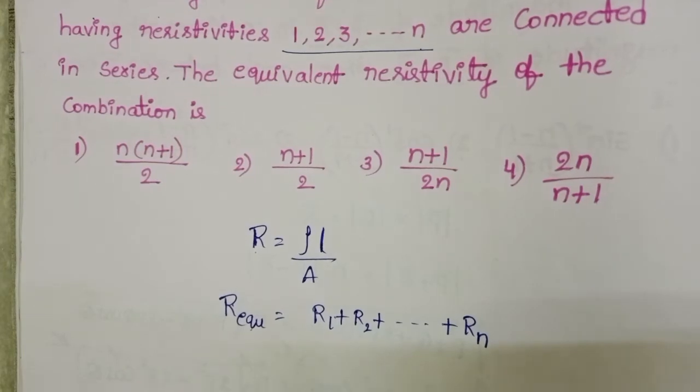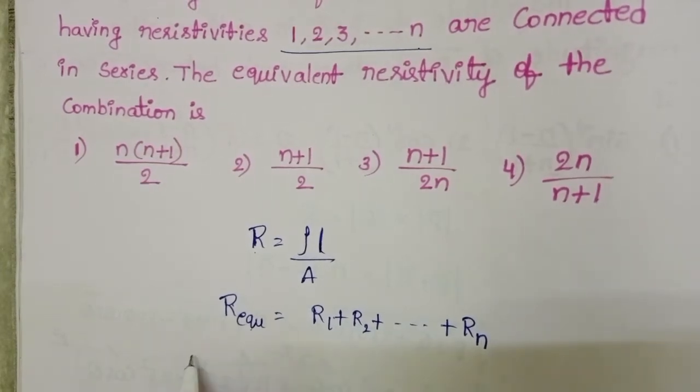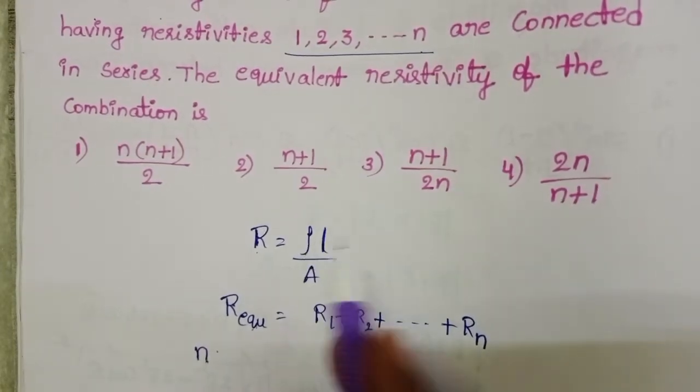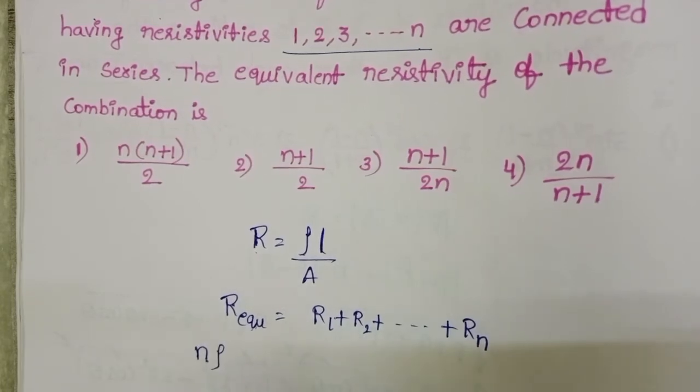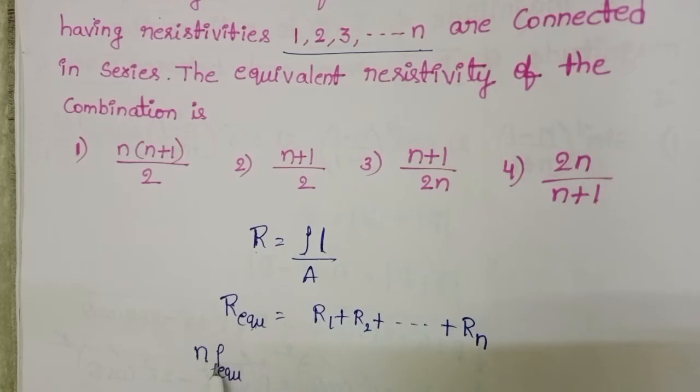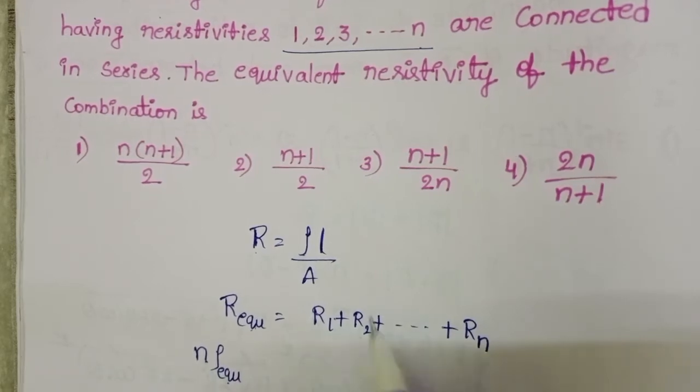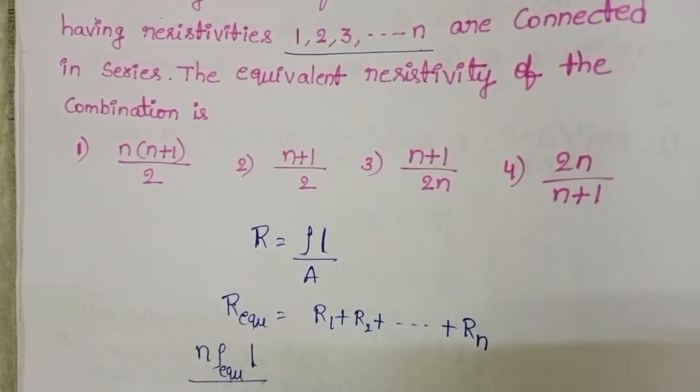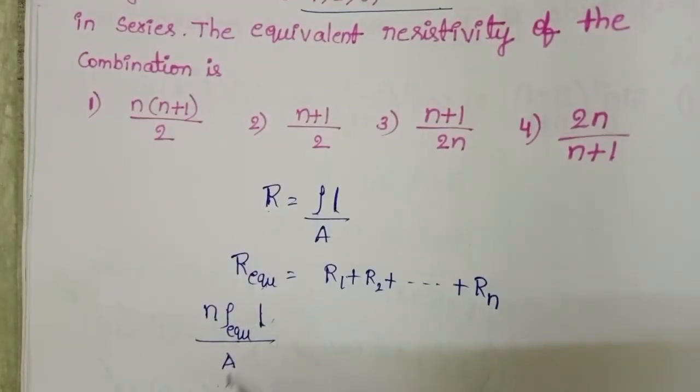So in place of R equivalent, total number of resistors N, specific resistivity is different. So in place of rho, equivalent specific resistivity into L by A because dimensions are same, length and area of cross section is same.